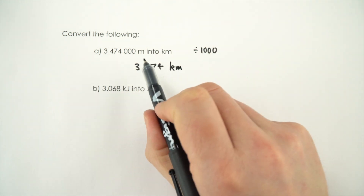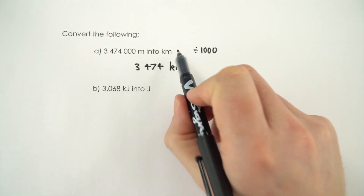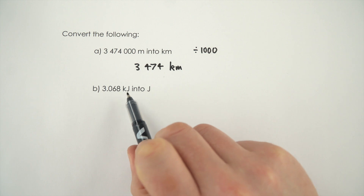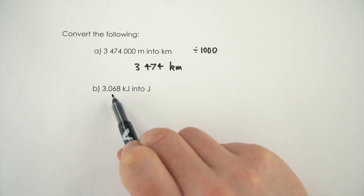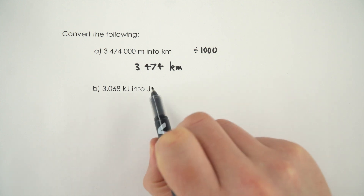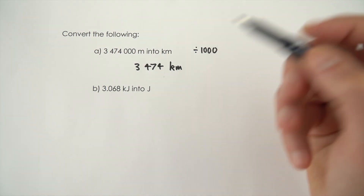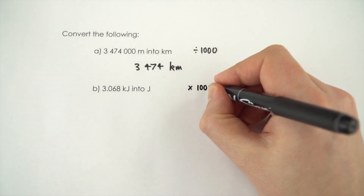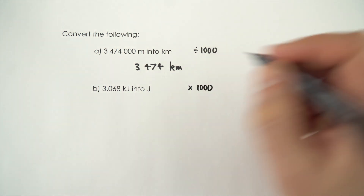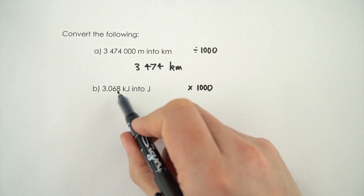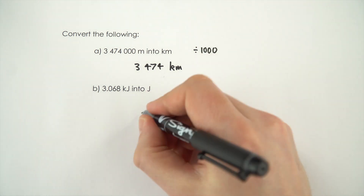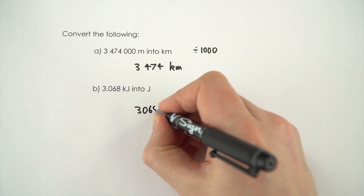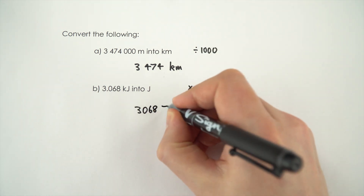Now we're going to go the other way. If you've got 3.068 kilojoules, how many joules is this? Well to work this one out, you need to multiply by a thousand. So 3.068 times a thousand is 3,068 joules.